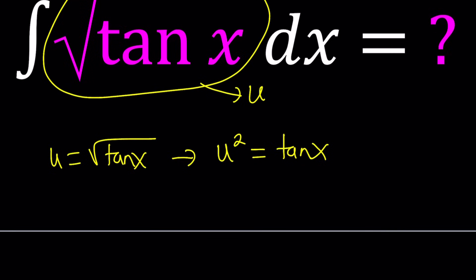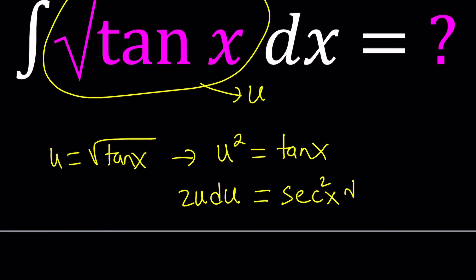So let's go ahead and differentiate both sides and multiply by the differentials so we can get the d's. The left-hand side: you differentiate u squared with respect to u and then multiply by du, giving 2u du. On the right-hand side, the derivative of tangent x is just secant squared x, and then we multiply by dx.